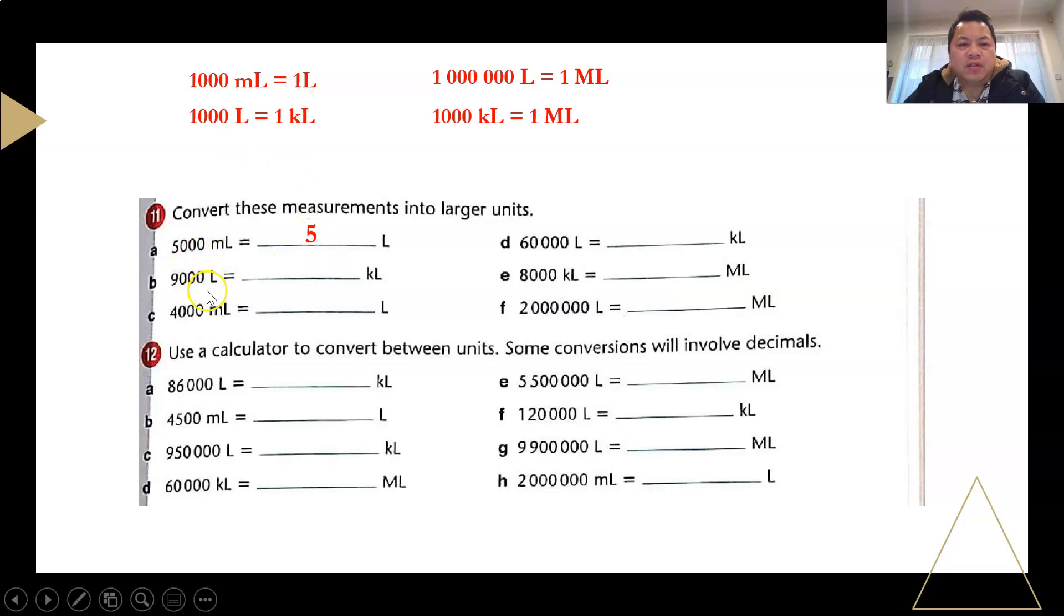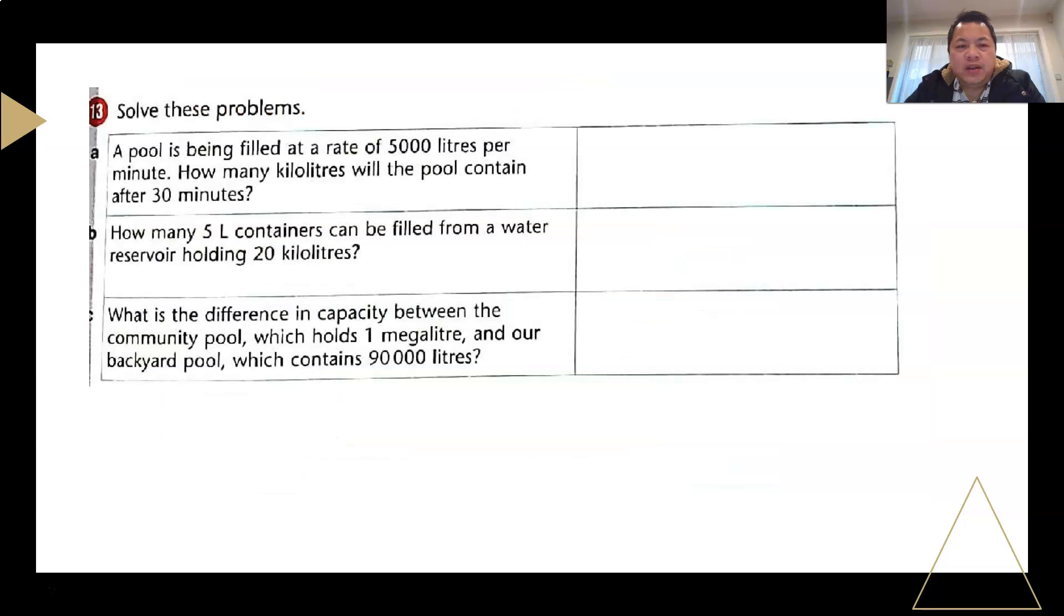So smaller to the bigger unit, there are three zeros, I divide by 1,000. A smaller unit to a bigger unit, it's 1,000. So, I would like you to solve all this on your own, and then compare your answer with mine. Do mark your work accordingly.